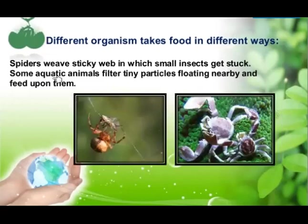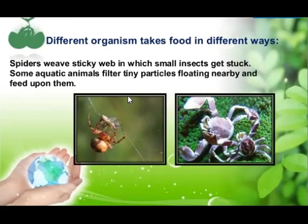Spiders weave a sticky web in which small insects get stuck. The small insects get caught in the web and spiders feed on them. Some aquatic animals filter tiny particles floating nearby and feed upon them — they allow water to enter their mouth, then release the water and filter the tiny organisms present in it.